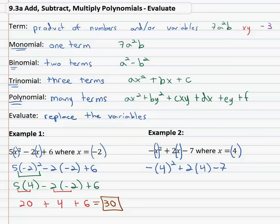Again order of operations squaring the 4, we have the opposite of 16 plus 2 times 4 minus 7. Multiplication comes next in order of operations, so we have negative 16 plus 8 minus 7. Do all that adding and subtracting and we end up with negative 15 for our final answer.